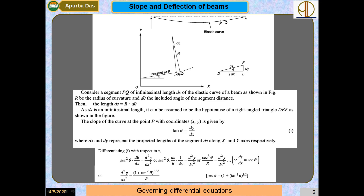Since ds is very small, it can be assumed as the hypotenuse of a right-angle triangle. From the slope of this curve at point P with coordinates (x, y), we can write tan θ = dy/dx, where dx and dy represent the projected lengths of segment ds along x and y respectively.